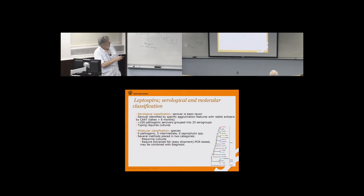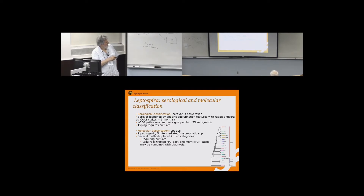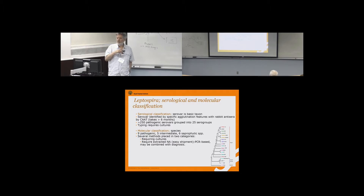We now have about 250 pathogenic serovars grouped into 25 serogroups, with around 300 recognized serovars overall. For molecular classification, there are nine pathogenic species, five intermediates, and six saprophytic species — though a recently reported seventh saprophytic species may actually not be saprophytic on further investigation. Serovars are usually adapted to certain hosts, but one host can carry more than one serovar — for example, pigs can carry Pomona, Tarassovi, and Bratislava; cattle can have hardjo or Pomona; dogs increasingly carry Grippotyphosa.